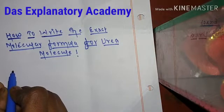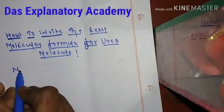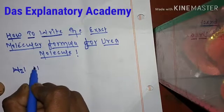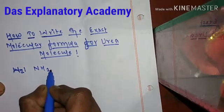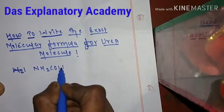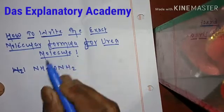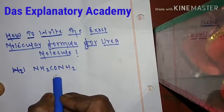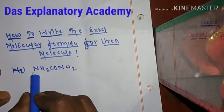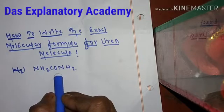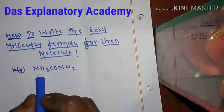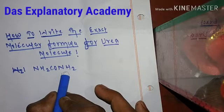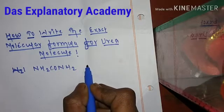At most instances, the formula for the urea molecule that you see is NH2CONH2. This formula is seen at most instances.